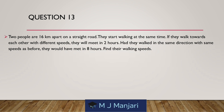Question 13. Two people are 16 km apart on a straight road. They start walking at the same time. If they walk toward each other with different speeds, they will meet in 2 hours. Had they walked in the same direction with the same speeds as before, they would have met in 8 hours. Find their walking speeds.